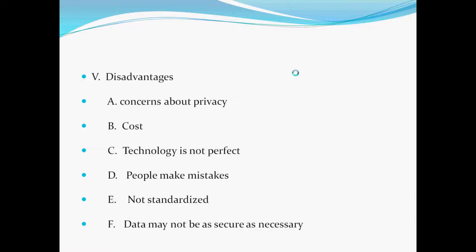Other disadvantages: technology is not perfect. People make mistakes. Most electronic health records have drop-down boxes, and if you click on the wrong box, that information could end up in the record and be totally wrong. Health records are not standardized and data may not always be secure, but part of meaningful use requires a certified system that does have privacy protections.